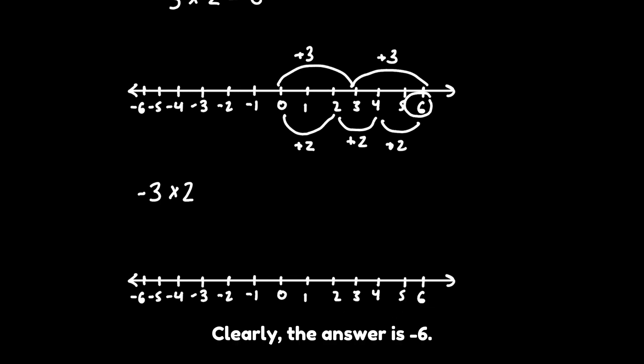Clearly, the answer is negative 6. And when using repeated addition on the number line, negative 3 times 2 is the same as two groups of negative 3.